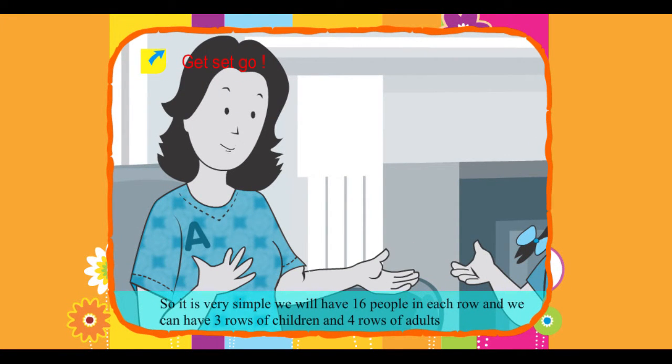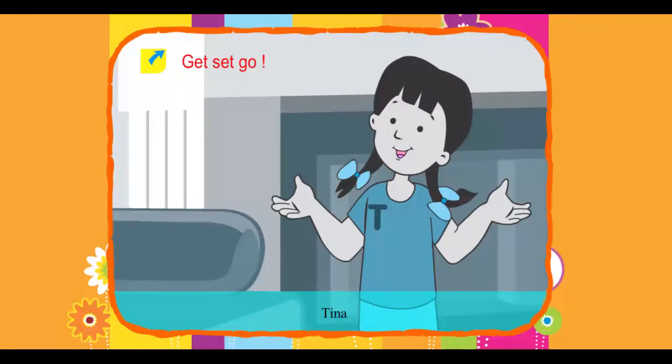Mom: So it is very simple. We will have 16 people in each row and we can have 3 rows of children and 4 rows of adults. Tina: This is so amazing mummy, you did your calculations so easily.